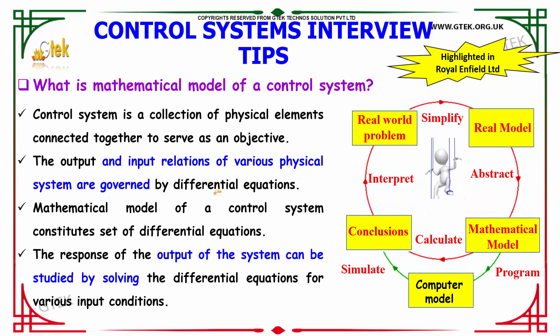What is the mathematical model of a control system? A control system is a collection of physical elements connected together to serve an objective. The output and input relations of various physical systems are governed by differential equations. The mathematical model of a control system constitutes a set of differential equations. The response of the system output can be studied by solving these differential equations for various input conditions.